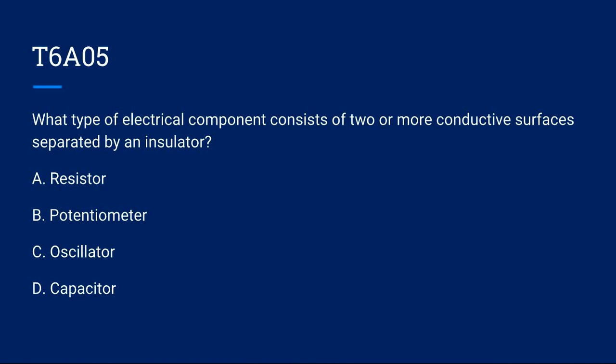T6A05: What type of electrical component consists of two or more conductive surfaces separated by an insulator? A, resistor. B, potentiometer. C, oscillator. Or D, capacitor? The correct answer is D, capacitor.